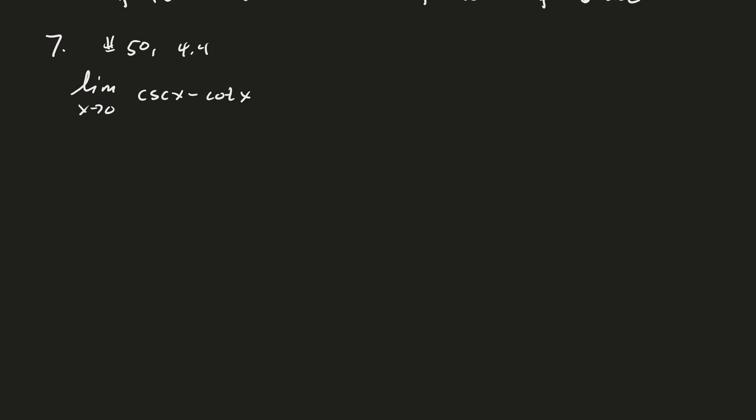So I think the first step for this kind of a thing would be to convert things into sines and cosines, right? Just so you can see better what's happening. So cosecant would be 1 over the sine. Cotangent is cosine over sine. And once we get to this point, you see a common denominator. So, hey, grab it. Good. And now we see we have a 0 over 0. And so now we're set up for L'Hôpital.